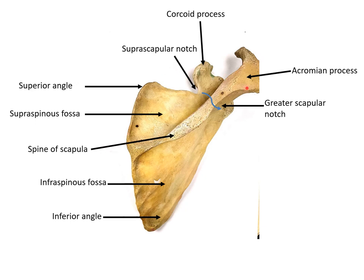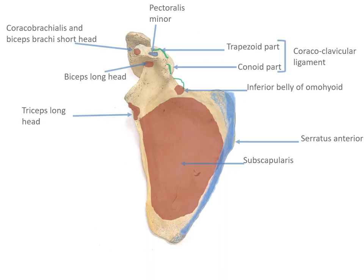On the posterior surface, the whole area is divided into two compartments by the spine of scapula. The fossa above the spine of scapula is the supraspinous fossa, and the fossa below is the infraspinous fossa. Between the coracoid process and the superior border there is a notch - the suprascapular notch - which acts as a passage for the suprascapular nerve and vessels. There is also a greater scapular notch for neurovascular bundle passage. The spine of the scapula extends as the acromion process, which is the highest point on your shoulder.